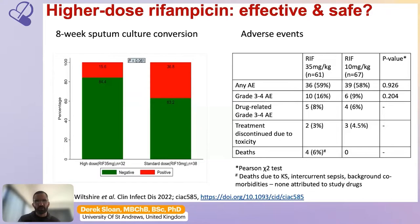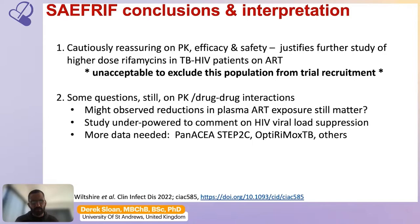The SAFERIF study was cautiously reassuring on drug-drug interactions: there was some effect on pharmacokinetic measurements of antiretroviral drugs in plasma, but it didn't seem to affect HIV control. The drugs were effective and safe when rifampicin was given at higher dose for TB management. This justifies further study and probably justifies use of high-dose rifampicin in TB-HIV patients, and this population should be included in further clinical trials.